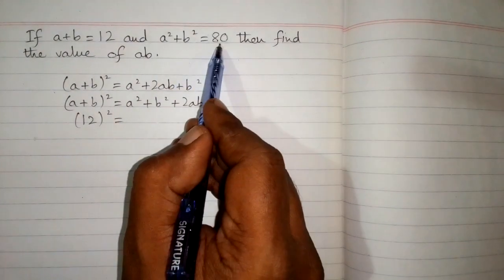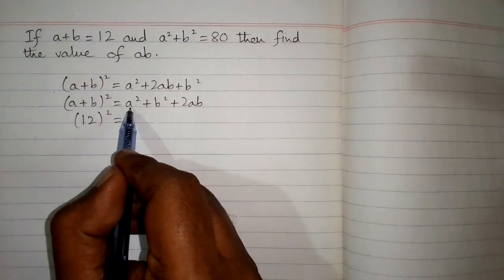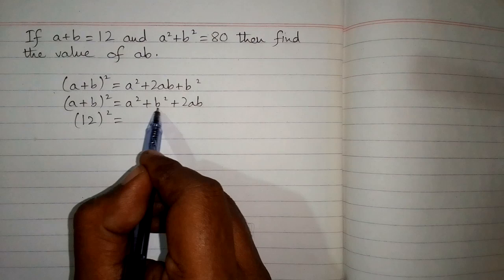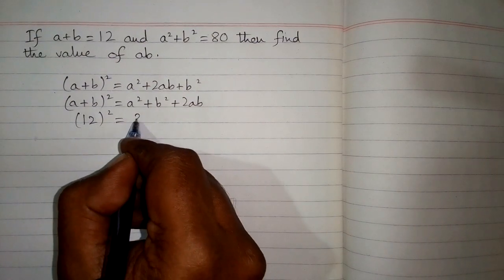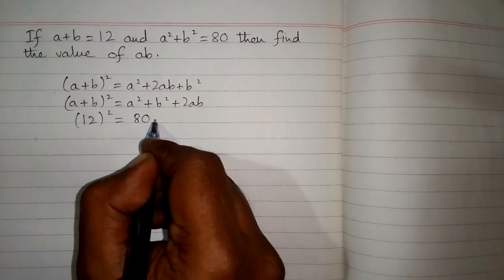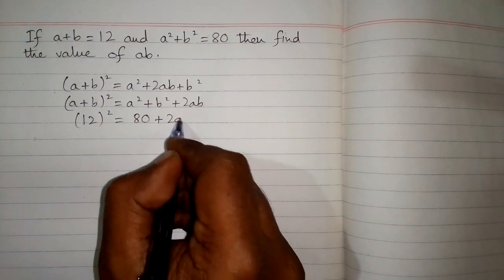The value of a² + b² is 80, so we substitute 80 for a² + b². This gives us (12)² = 80 + 2ab.